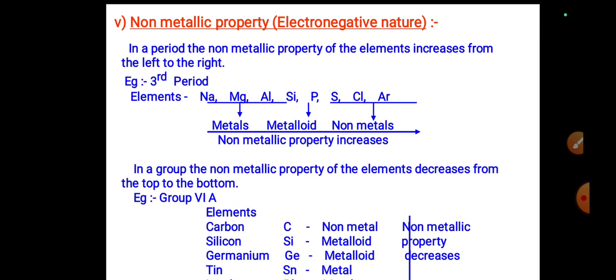Non-metallic property (electronegative nature): in a period, the non-metallic property of elements increases from left to right. In the third period — sodium and magnesium are metals; silicon and phosphorus are metalloids; sulfur, chlorine, and argon are non-metals. Non-metallic property increases across the period from left to right.